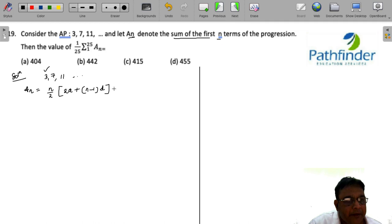What do you get? n/2 multiplied by 2a, that is 2 times 3, 6, plus (n-1) multiplied by 4. So what do you get as the general term for this summation? You get n/2 multiplied by 4n + 2, which is nothing but 2n² + n. This is a_n.